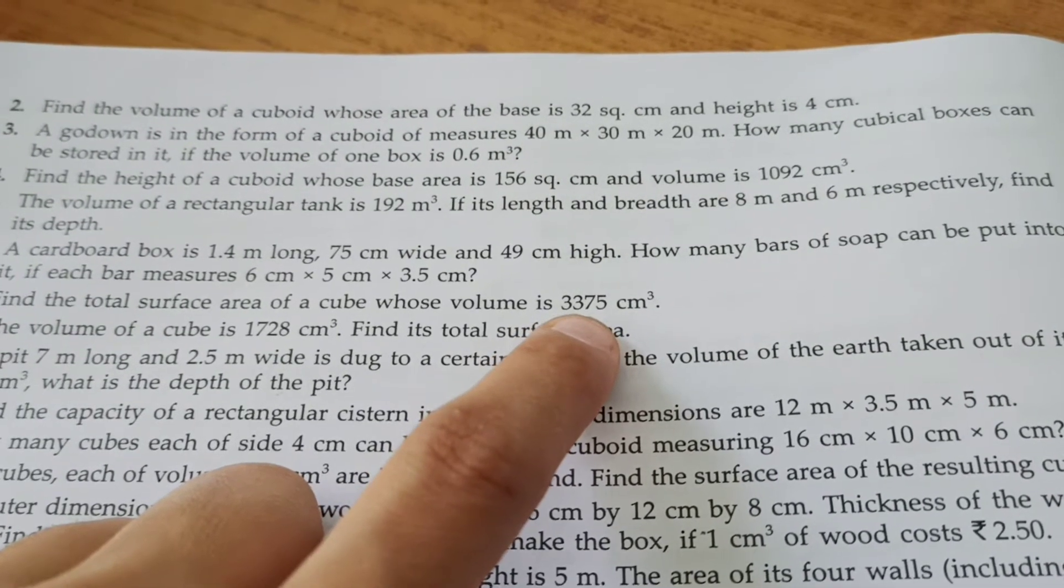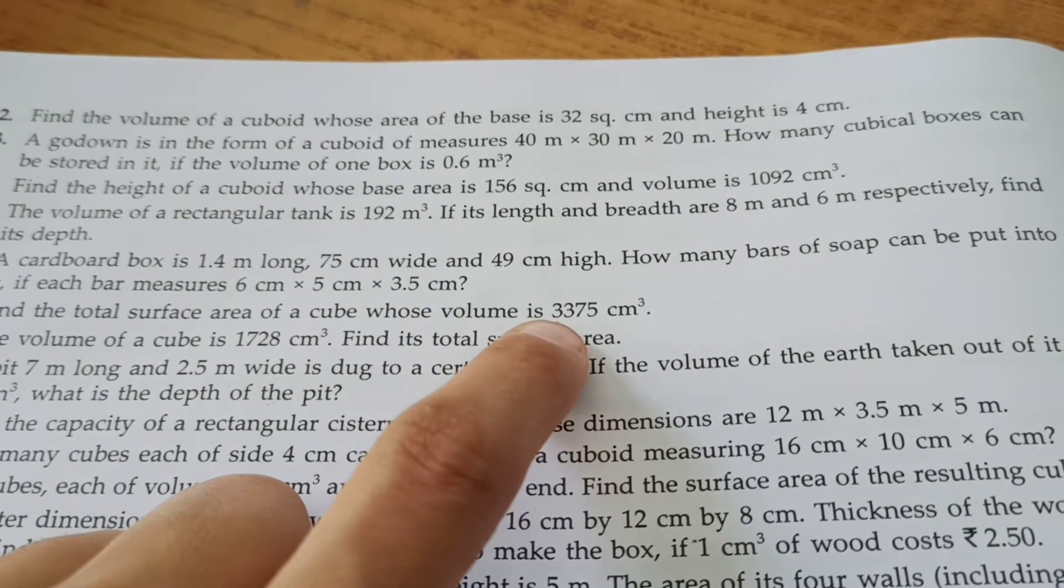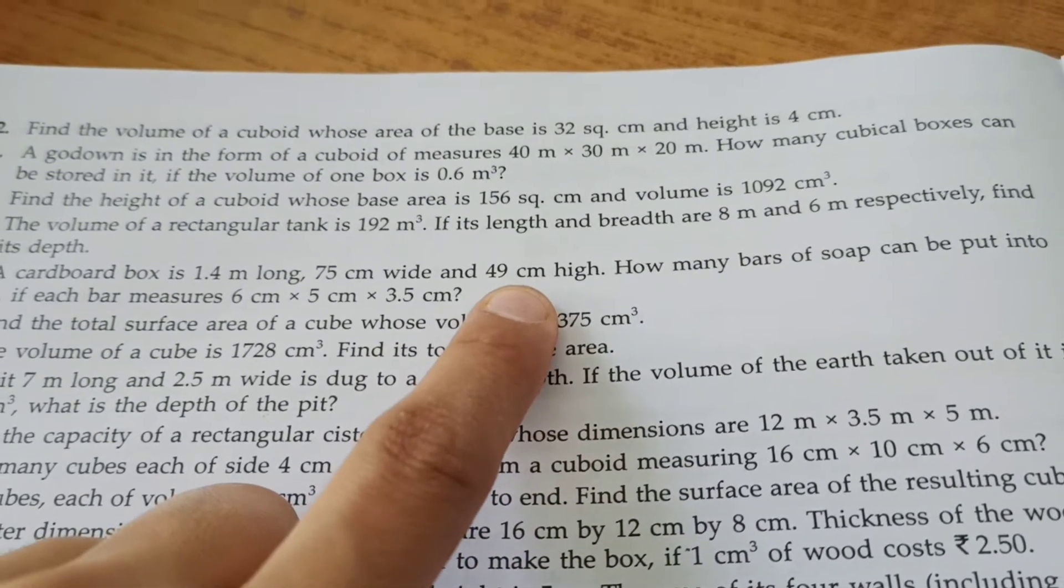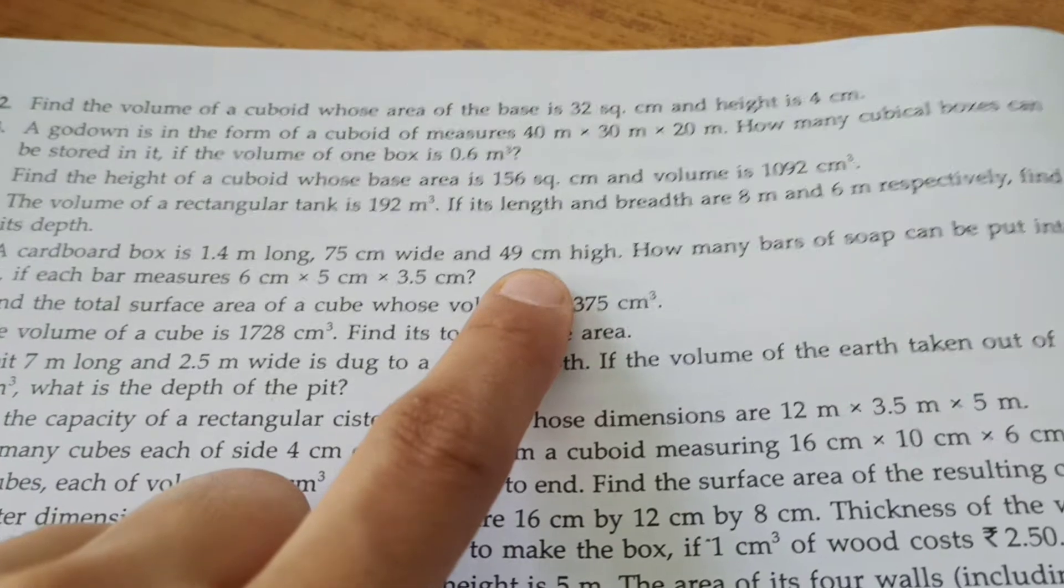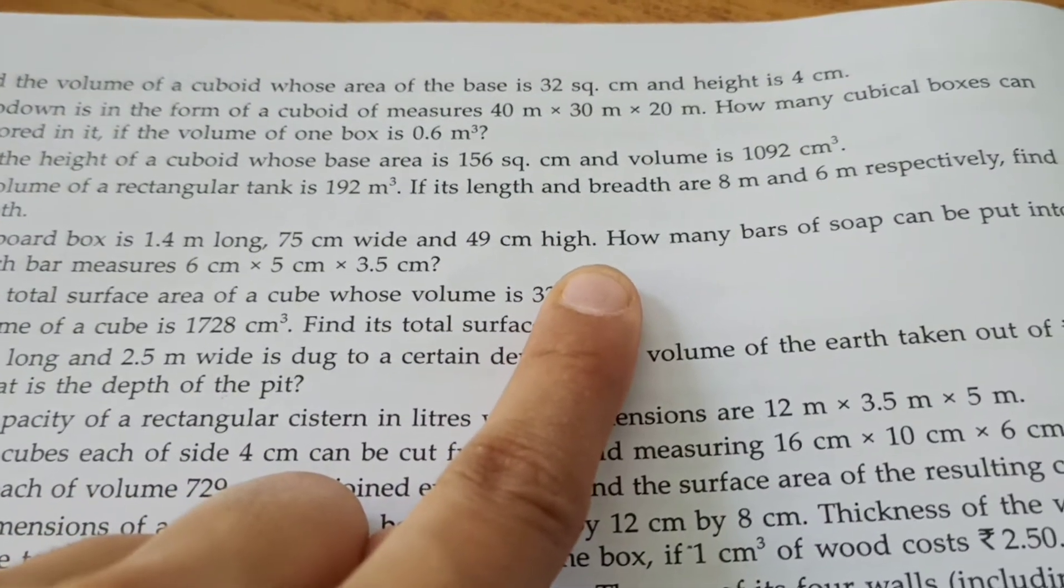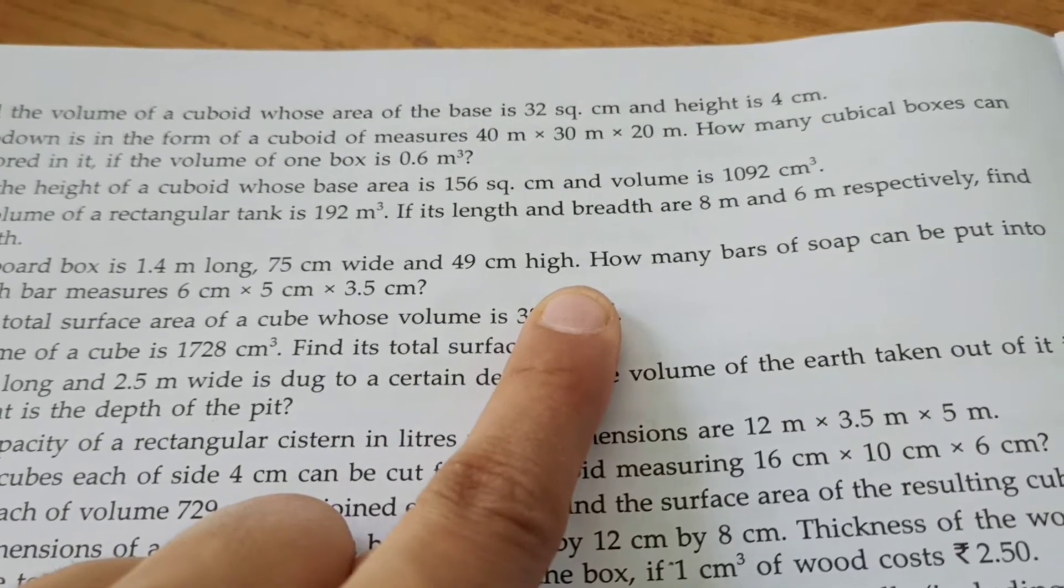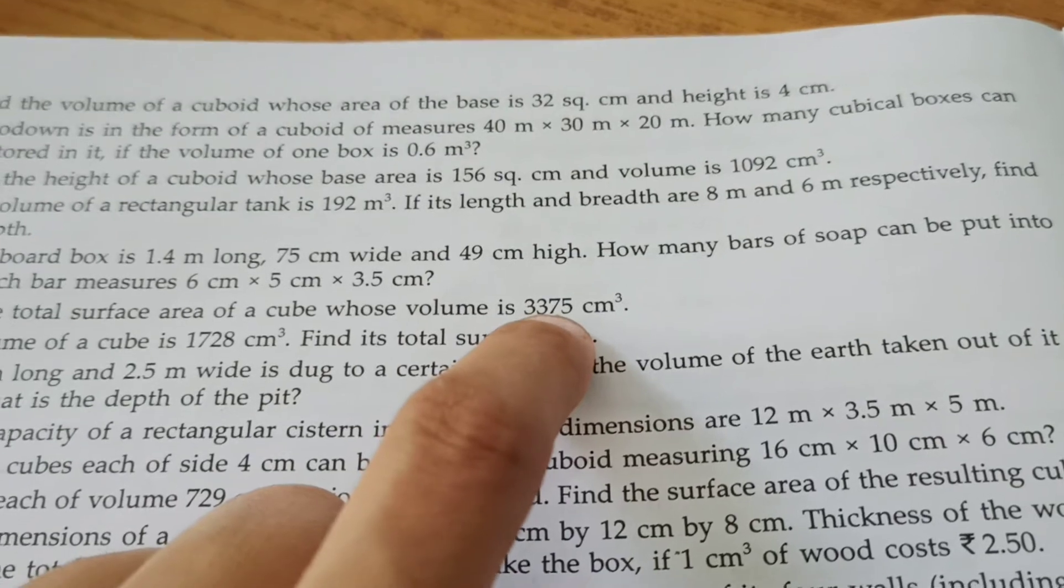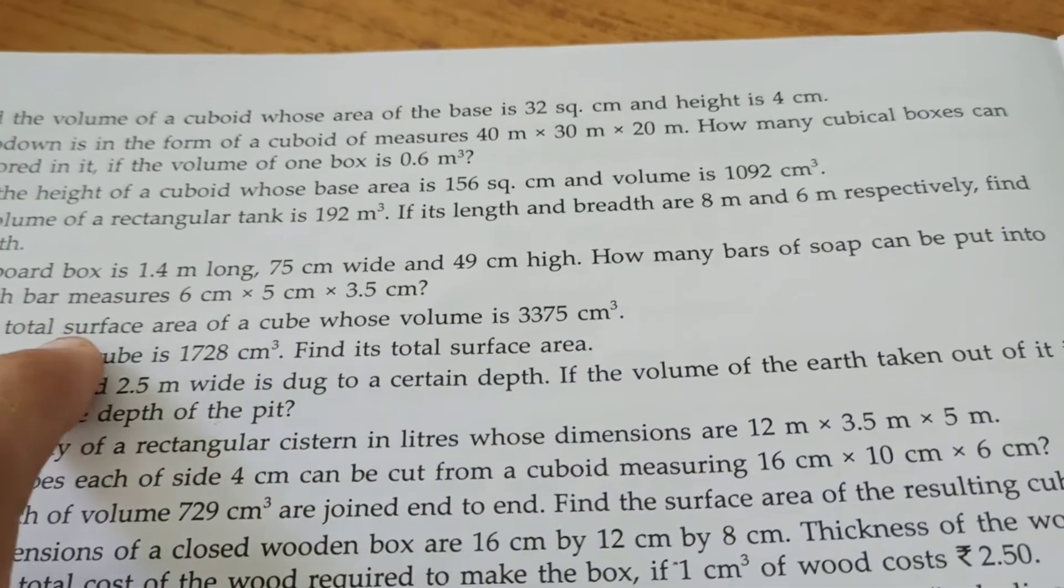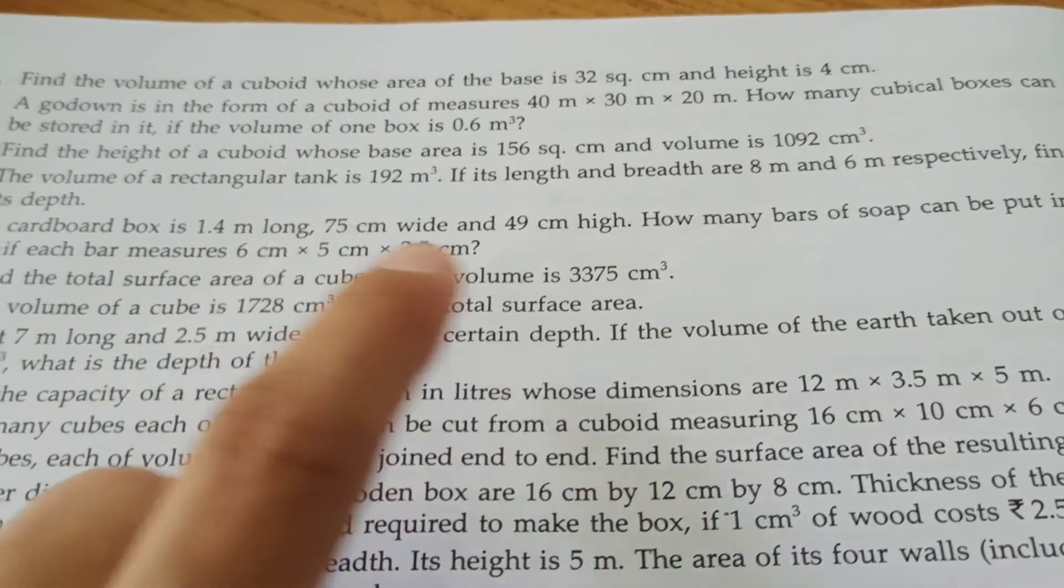3375 equals L into L into L, that is L cube. What do we do? We find the cube root. How do we find the cube root? Looking at the last three digits 375, the last digit is 5, so it's nearer to 1 cube. So 15 is our cube root. So L equals 15. And here total surface area equals 6L square, which is 6 into 15 square.